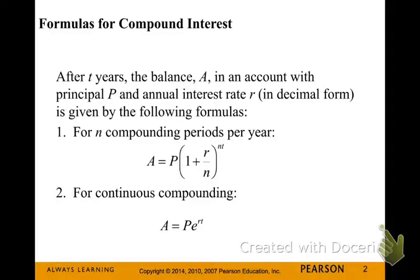Let's start with some compound interest formulas. After T years, the balance A in an account with principal P and annual interest rate R in decimal form is given by the following formulas. Number 1 is used when it's compounded periodically — N times per year. Number 2 uses the base-e formula when compounding continuously.